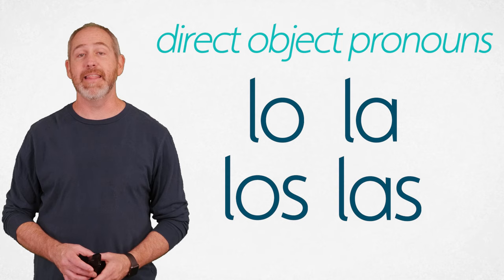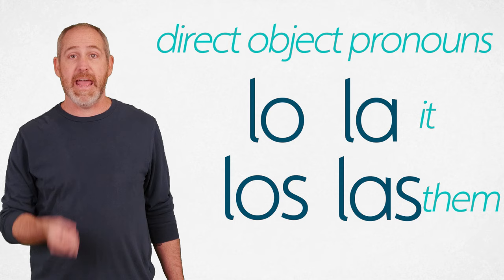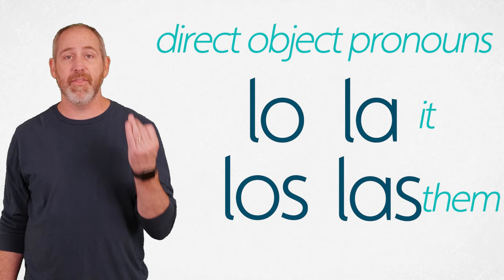So this is what we're talking about. Remember, direct object pronouns are lo, la, los, and las. That is how we say 'it' and 'them' when we are talking about an object. So where is my pencil? I have it. It is replacing the direct objects with a direct object pronoun. So lo, la, los, las means 'it' and 'them' talking about an object.